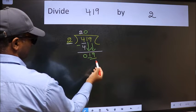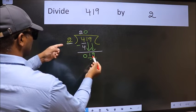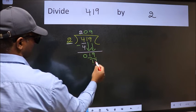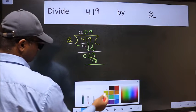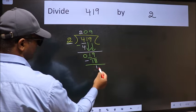Now 19. A number close to 19 in 2 table is 2 9's, 18. Now we should subtract. We get 1.